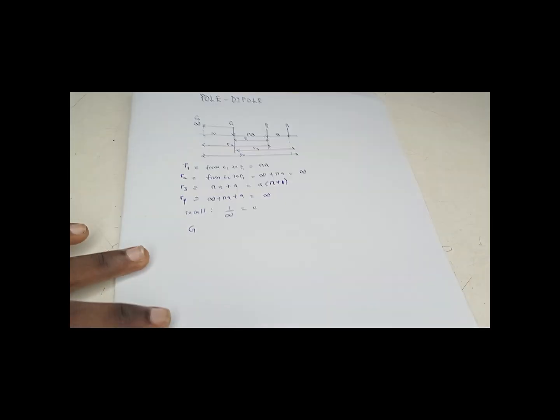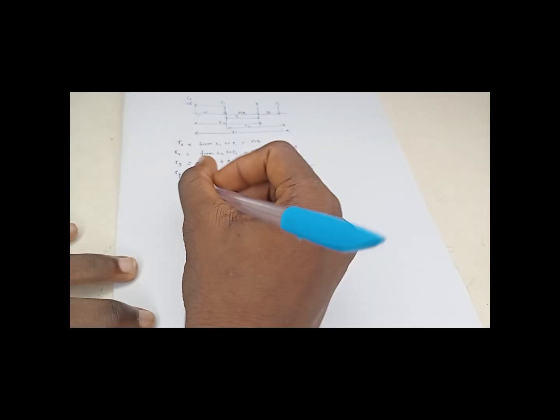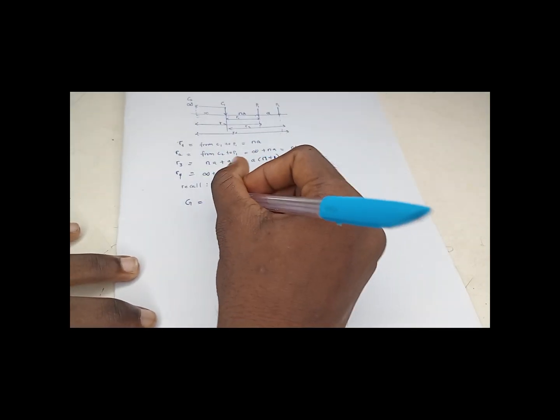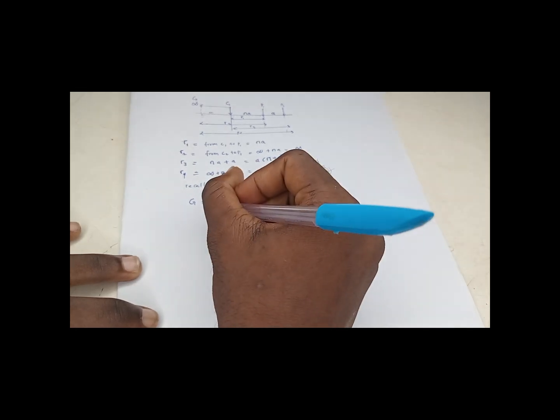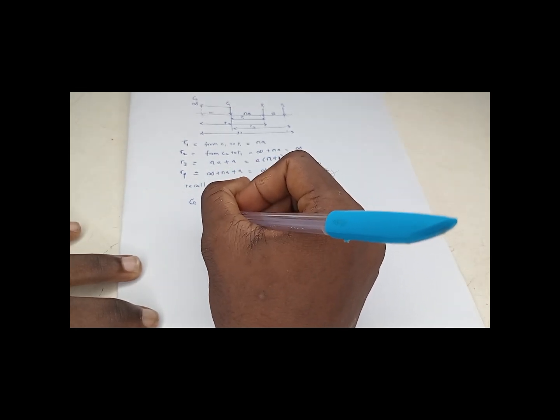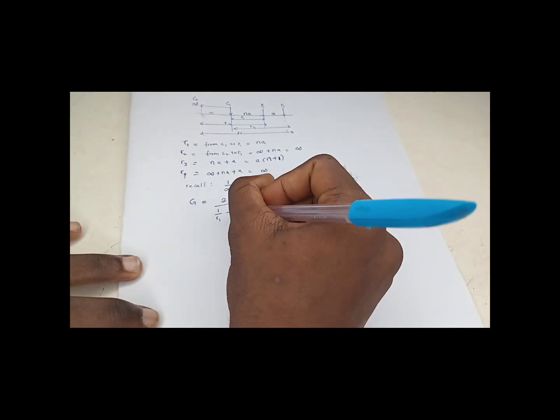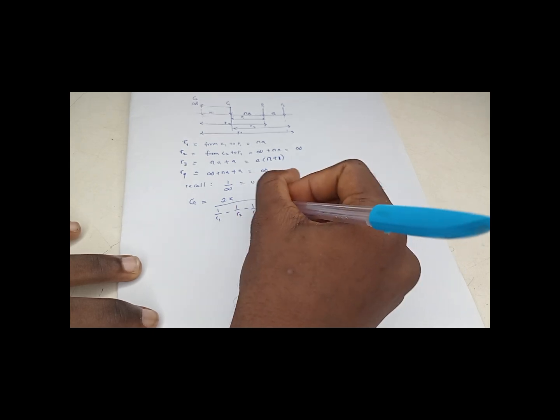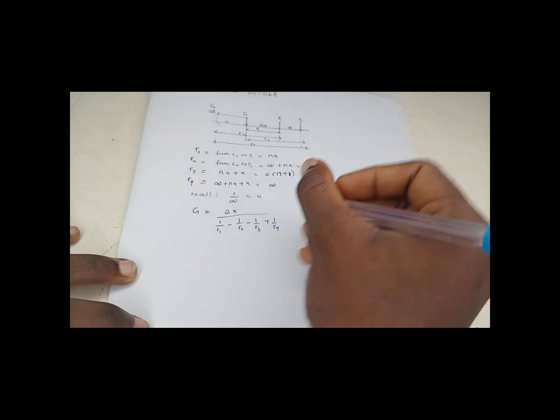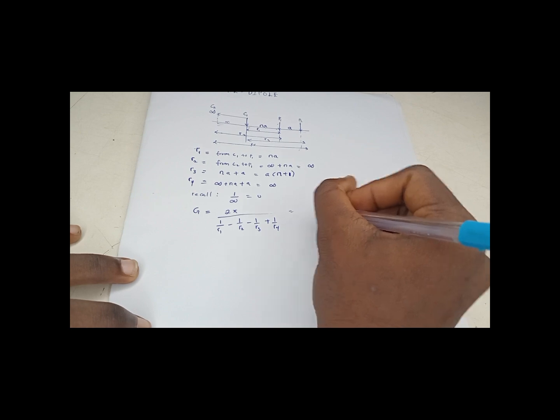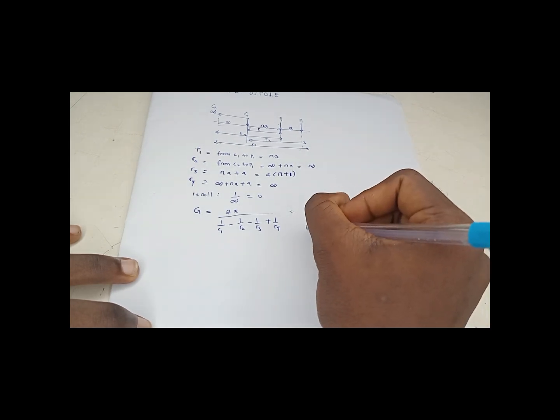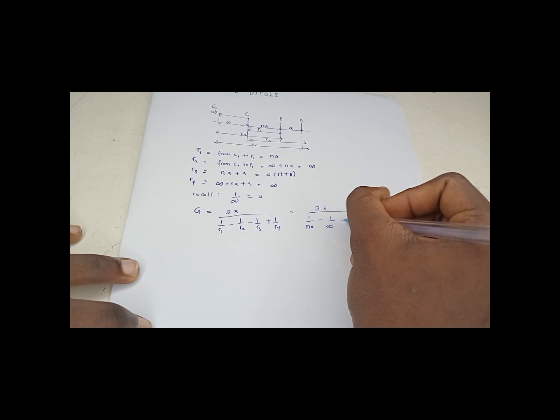So G now is now equals to 2π over [1 over R1 minus 1 over R2 minus 1 over R3 plus 1 over R4]. So this gives us 2π over [1 over N times A minus 1 over infinity minus 1 over A bracket (N plus 1) plus 1 over infinity].